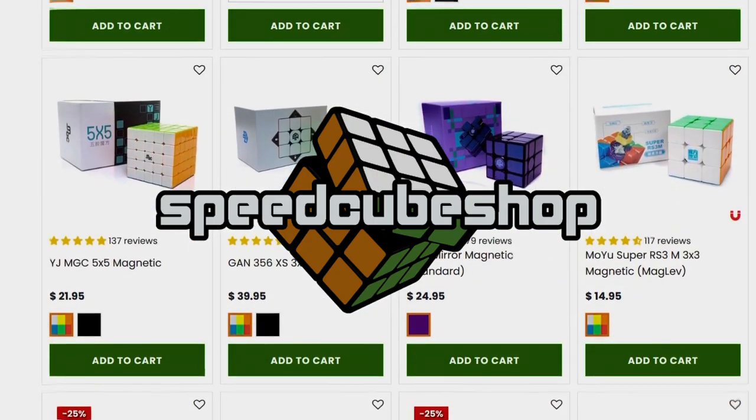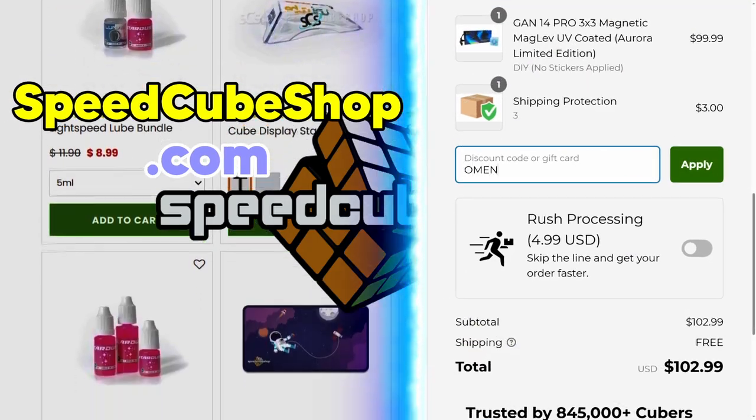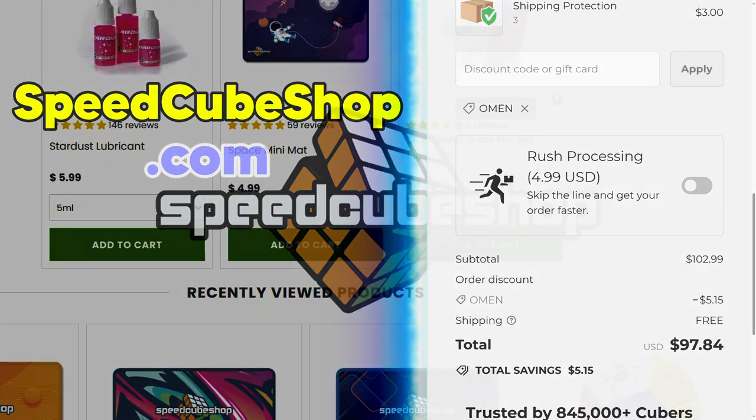A quick link in the description to our sponsor, speedcubeshop.com, where you can buy all of your cubing needs. Use code Omen for a discount.